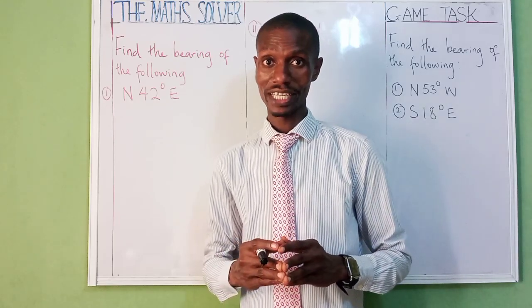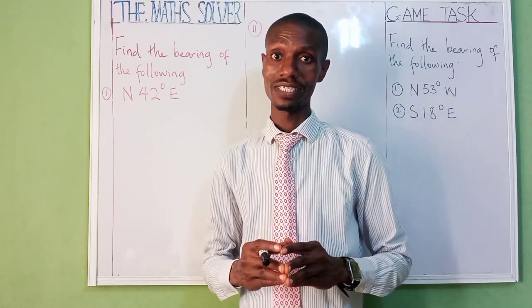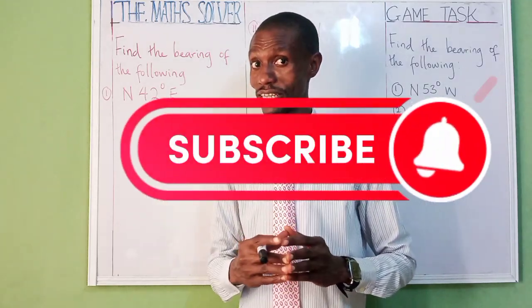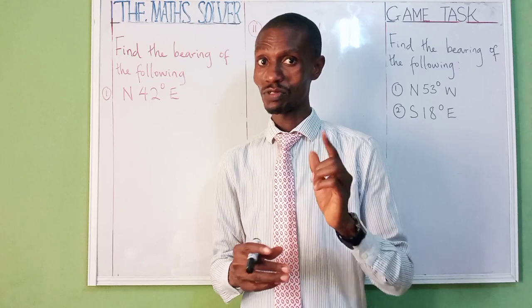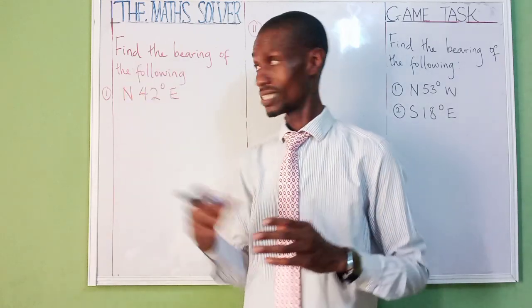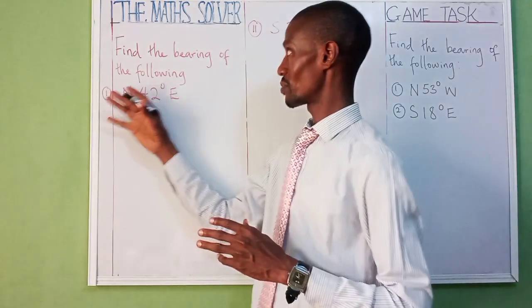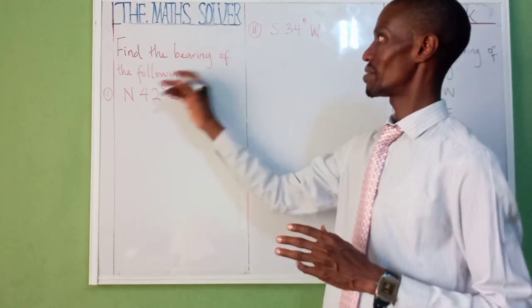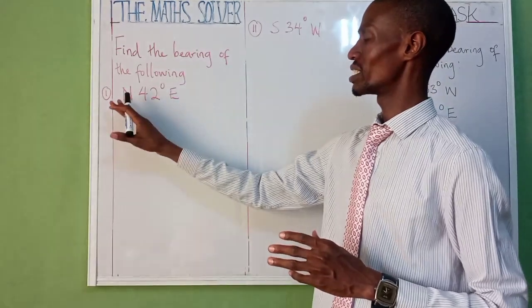Hello friends, welcome to the channel. Please subscribe to the channel. Today we are solving bearing — finding the bearing of the following: north 42 degree east, south 34 degree west.